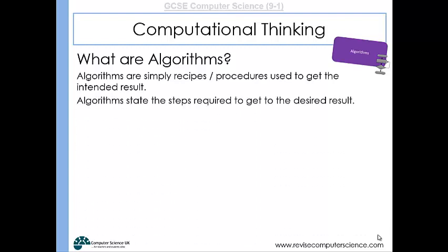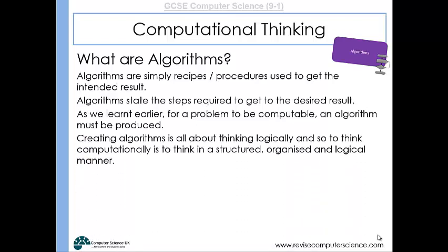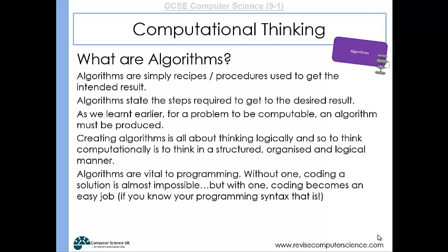It's the steps that are required to get a desired outcome. And as we've learned earlier, for a problem to be computable, an algorithm must be produced. And creating algorithms, it's all about logical thinking, thinking logically. So to think computationally is to think in a structured, organized, and logical manner. And it's important that we write algorithms when we're programming because without one, coding a solution is almost impossible, but with one, coding becomes an easy job.